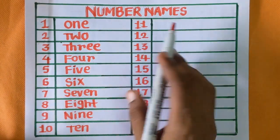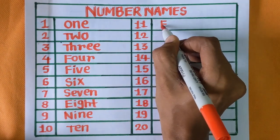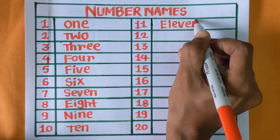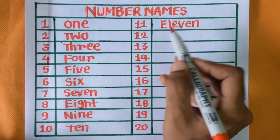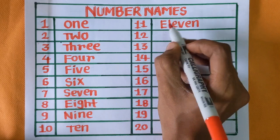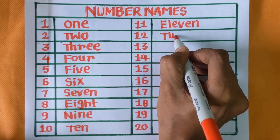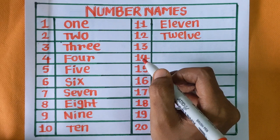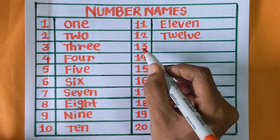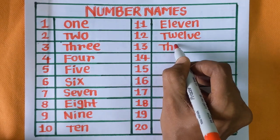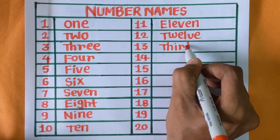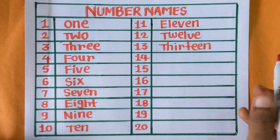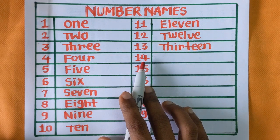Our next number is number eleven, E-L-E-V-E-N, eleven. Next is twelve, T-W-E-L-V-E, twelve. Next number is number thirteen, T-H-I-R-T double E-N, thirteen. Next is fourteen.